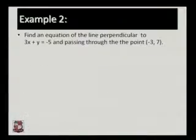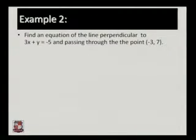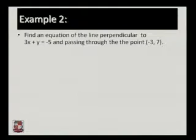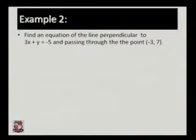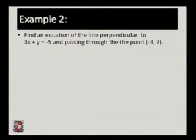Now let us look at one more example related to perpendicular lines. The second example: find an equation of the line which is perpendicular to the line 3x plus y equals minus 5 and which is passing through the point (-3, 7).